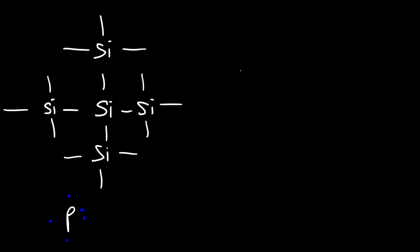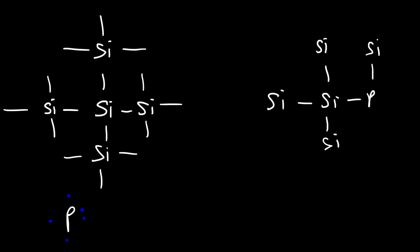What happens if we dope the silicon crystal with an element that has 5 valence electrons, like phosphorus? If we replace a silicon atom with a phosphorus atom — each silicon atom used 4 valence electrons to create 4 bonds, and phosphorus is going to do the same thing. It will use 4 of its 5 valence electrons to create 4 bonds with the neighboring silicon atoms. However, it still has 1 valence electron left over, and that extra electron is free to move in a conduction band.